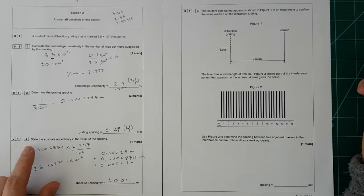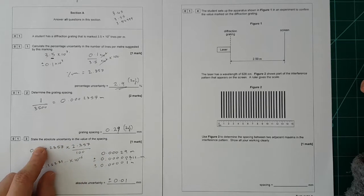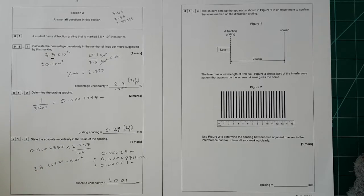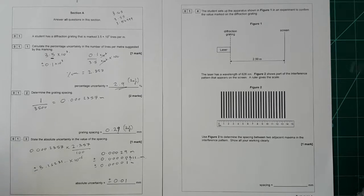Right, now this question did actually say state the absolute uncertainty value of the spacings. So according to that keyword, you should just be able to write down the answer. However, for the life of me, I can't figure out how you can do that without doing a simple calculation. So that's why I've done a calculation there. Sometimes specimen papers have little bits on that don't quite make sense. I think that's one of them.